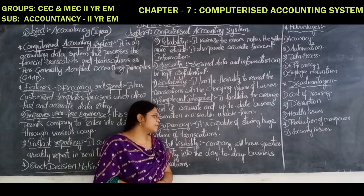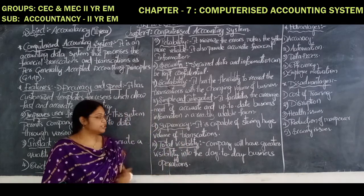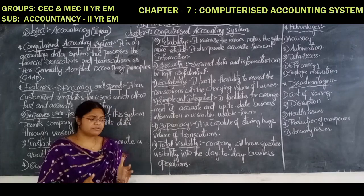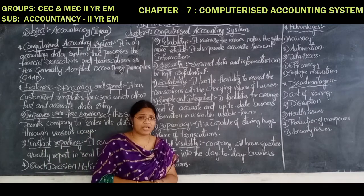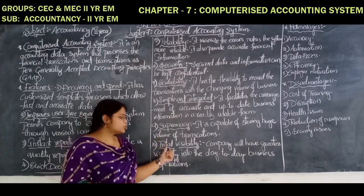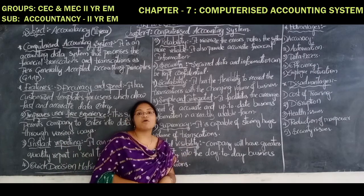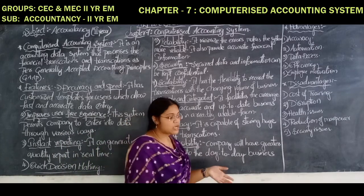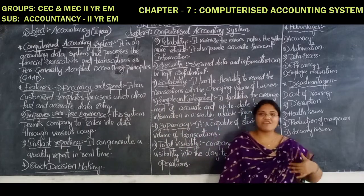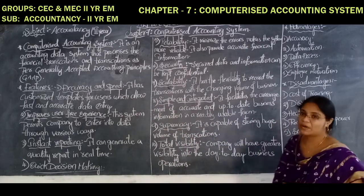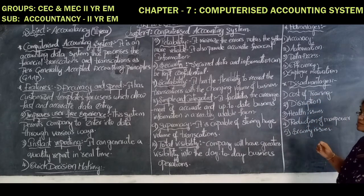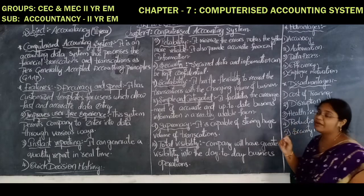Total visibility: the company will have greater visibility into day-to-day business operations. Whatever important decisions they have to take, they have to know the financial position. The financial position can be known with the help of computerized accounting because the computerized accounting will provide day-to-day information very fast as compared to other systems.